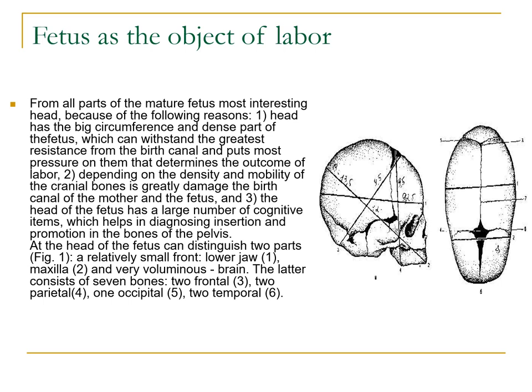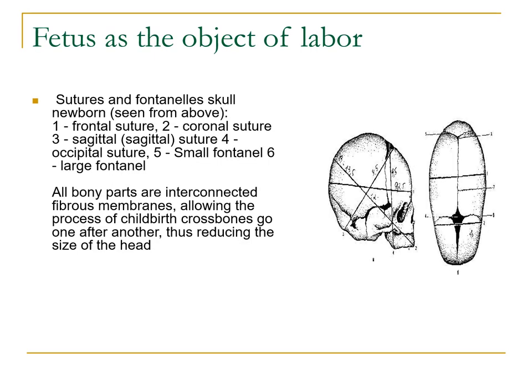At the head of the fetus we can distinguish two parts: a relatively small front — lower jaw and maxilla — and the very voluminous brain. The latter consists of seven bones: two frontal, two parietal, one occipital, and two temporal.